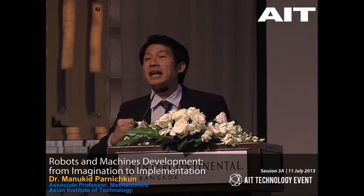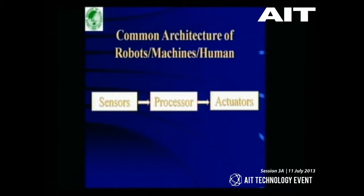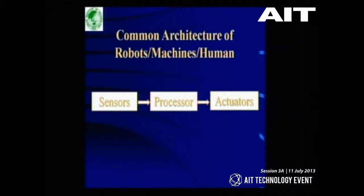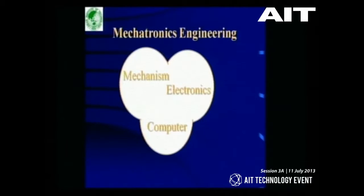Lastly, there is the actuation part. There are varieties of actuators — we may apply pneumatic or hydraulic actuators, each with pros and cons. We may apply electrical motors in the form of DC, AC, or stepping motors, and a variety of actuators introduced today. This knowledge is called mechatronics engineering. AIT is among the first pioneer universities which launched a mechatronics program in this region, starting more than 10 years ago.